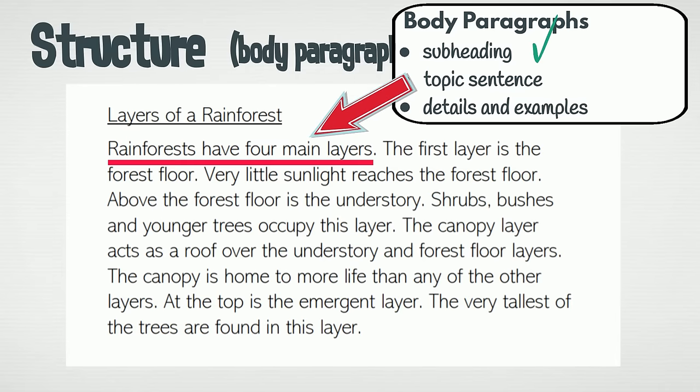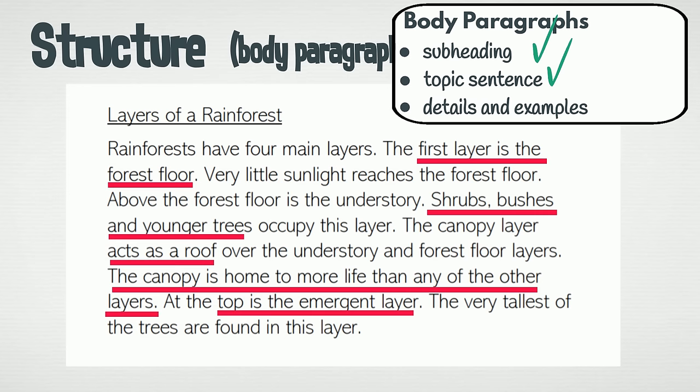Here is the topic sentence: rainforests have four main layers. Just like the subheading, this signals to the reader what the paragraph is about. The rest of the paragraph provides details and examples, all focused on the subtopic, layers of a rainforest.